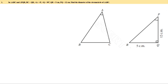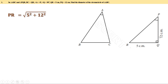Let us look at the figure first. Triangle PQR is a right angle triangle and PR is the hypotenuse. Let us find the hypotenuse PR. We know hypotenuse squared equals base squared plus altitude squared, so PR equals root of PQ squared plus QR squared, which equals root of 5 squared plus 12 squared, that is root of 25 plus 144, which equals root of 169.